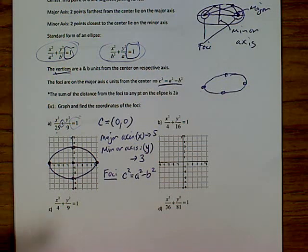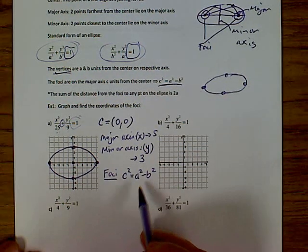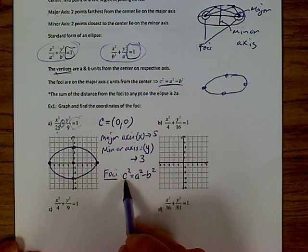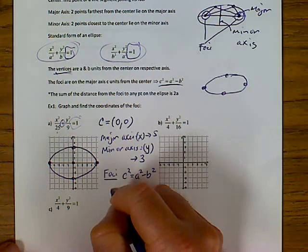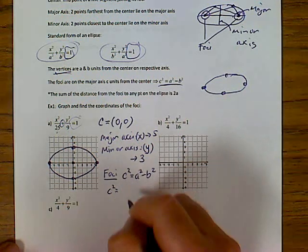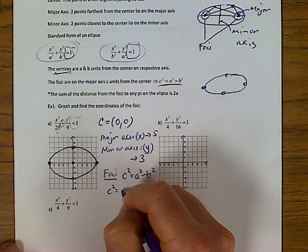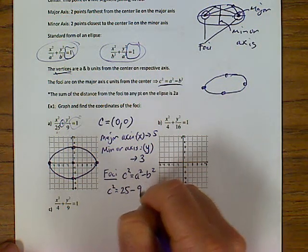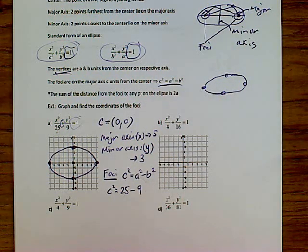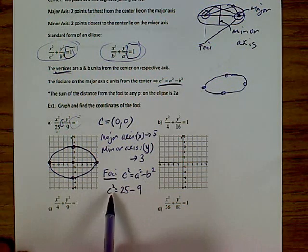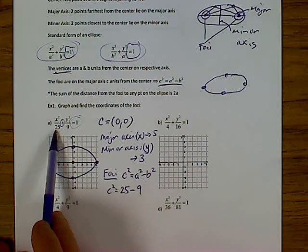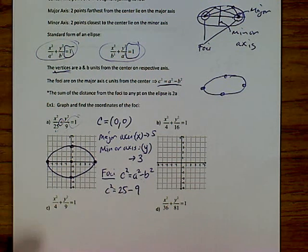Now a² and b² are the bottom numbers from the equation. The only way you can subtract and square root is if it's positive — you don't want any negative square roots. So for c², it has to be the biggest bottom number minus the smallest bottom number.